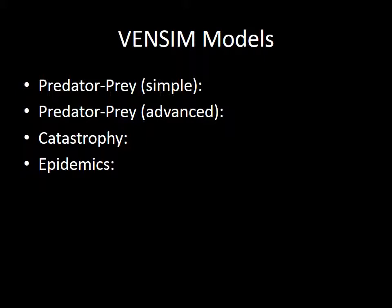We'll now move on to the Vensim models portion of the lecture. We're going to look at four Vensim models: predator-prey simple, predator-prey advanced, the catastrophe model — which is a combination of the others — and the epidemics model. Each model has its own link so you can view the individual videos on YouTube, or offline via Dropbox. That takes us through to the next part of the lecture.